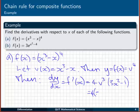So we end up with 4 times x cubed minus x to the third power times 3x squared minus 1. So our derivative in this case for f equals the fourth power of x cubed minus x is 4 times x cubed minus x to the third times 3x squared minus 1.